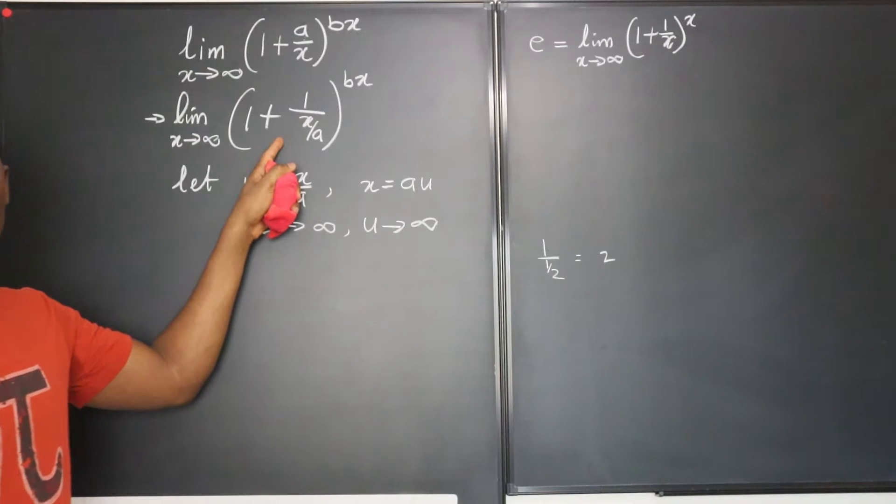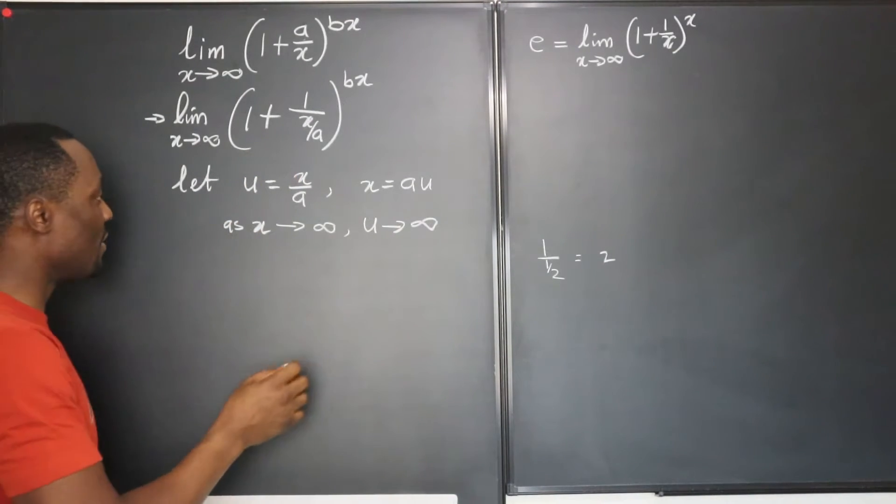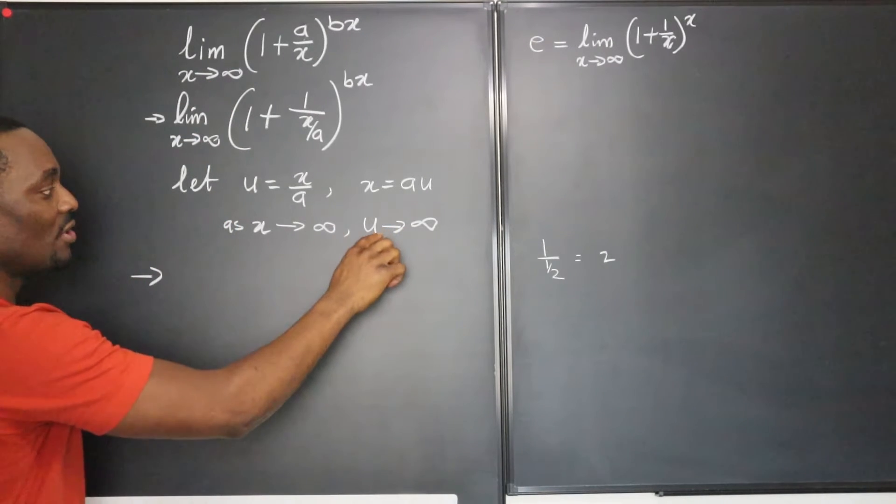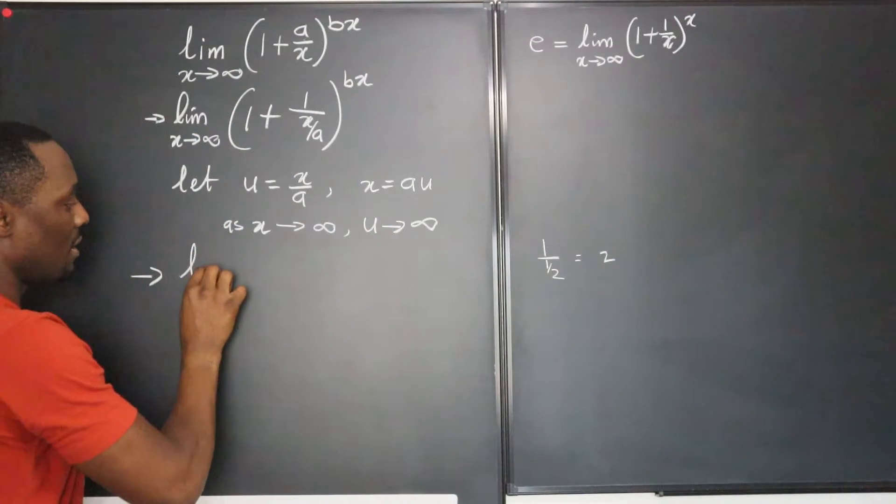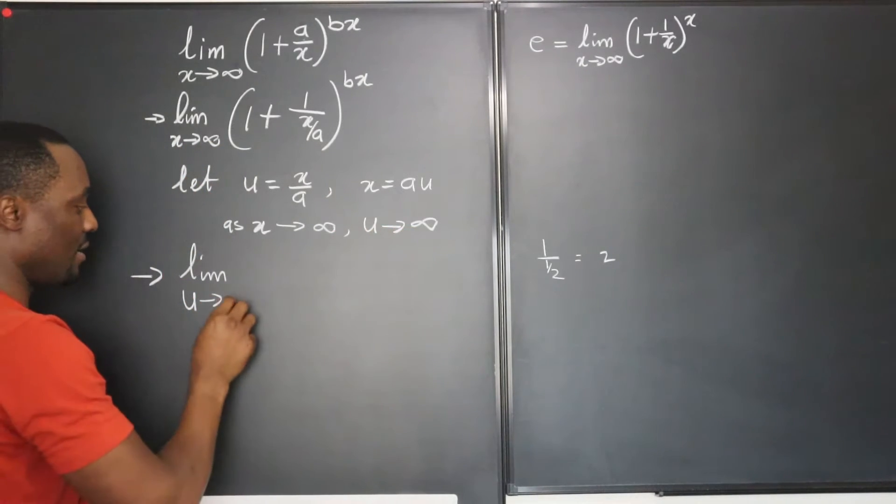And with this we can make this substitution and readjust it. So what we now need to do is to go back and rewrite this only in terms of u. So this would be the limit, instead of writing x, we just use u because we've established that here.